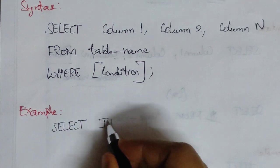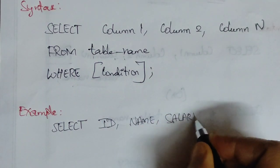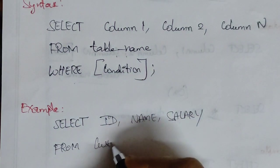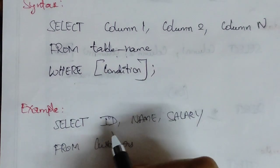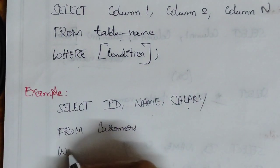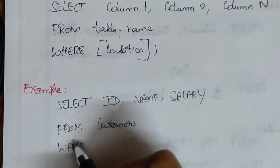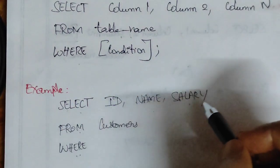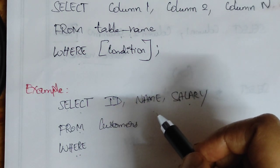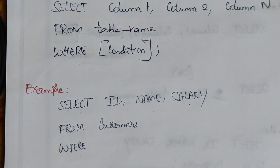Let me use this syntax. What are we doing here? SELECT three columns: ID, Name, and Salary FROM the table name Customers. From this table, we pick the ID, Name, and Salary.